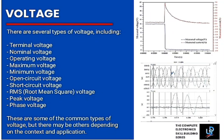There are several types of voltage based on terms used in the industry. We have terminal voltage, nominal voltage, operating voltage, maximum and minimum voltage, open circuit voltage and short circuit voltage, root mean square RMS voltage, peak voltage, and phase voltage. These are some of the common types and their uses depend on the context and application.